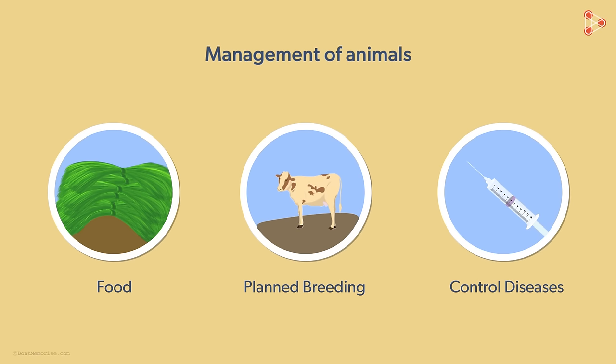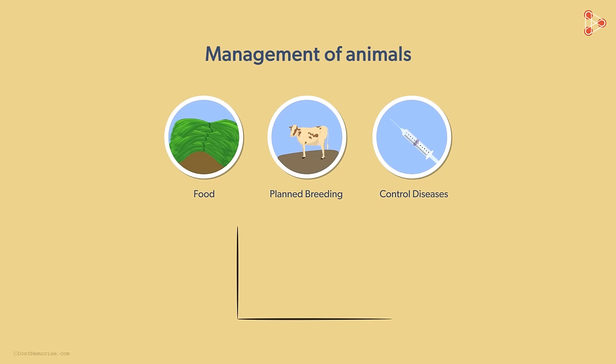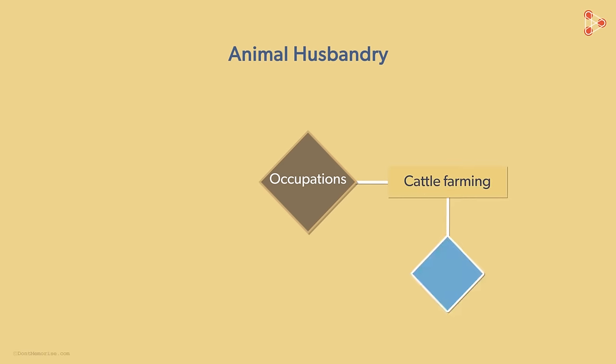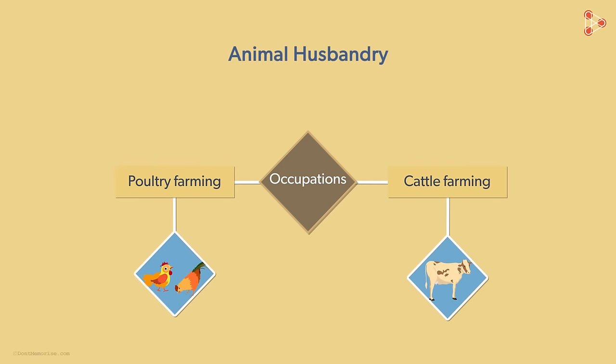Why do we need animal husbandry? The population of humans is on the rise, and it is necessary to provide food for their needs. Animal husbandry takes care of the growing needs of the population to a large extent. It includes different types of occupations like cattle farming, poultry farming, and many more.